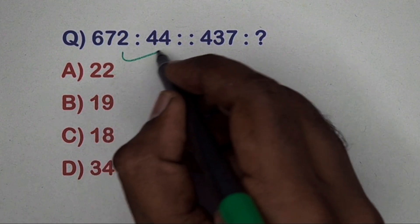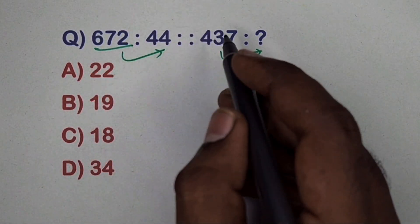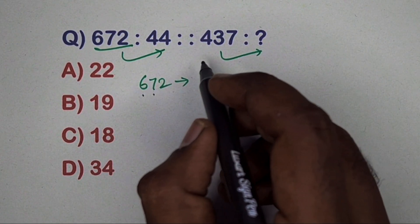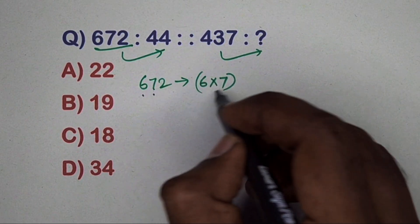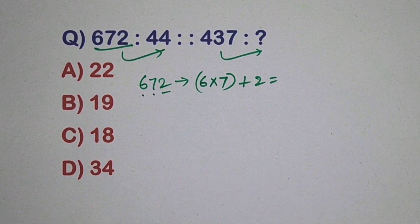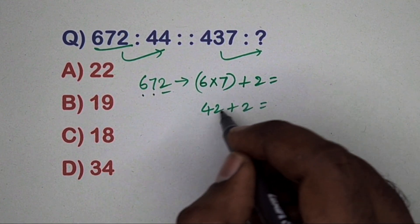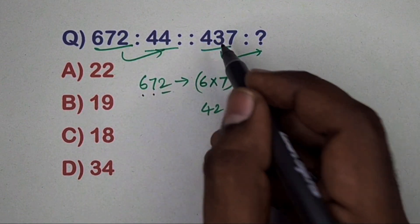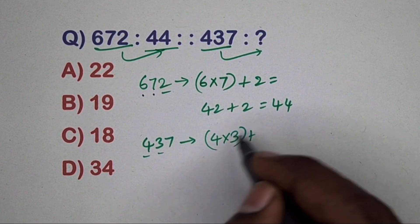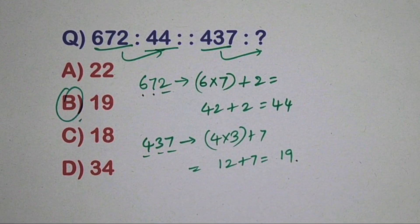Next question: 672 related to 44, 437 related to which number? Take 672 — multiply the first and second digits: 6 times 7 equals 42, then add the third digit 2, so 42 plus 2 equals 44. Same way, 437 — 4 times 3 equals 12, plus 7 equals 19. Option B is the correct answer.